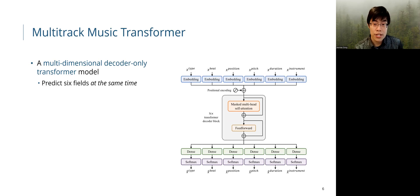With the proposed representation, the model itself is basically a decoder-only transformer model with multi-dimensional inputs and outputs. That is, at each time step, the transformer is trained to predict an event with six fields at the same time.